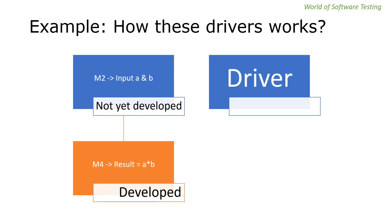Let's understand how the driver works with an example. We have two models: m2 and m4. m4 is the lower model and m2 is the top model. In the bottom-up approach, m2 is not yet developed but m4 is developed. We need to test m4 with the help of m2, but m2 is not available. In such a case we use a driver as a dummy or fake code in place of m2.